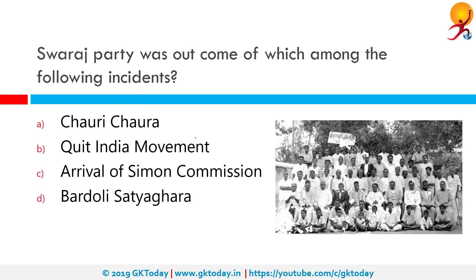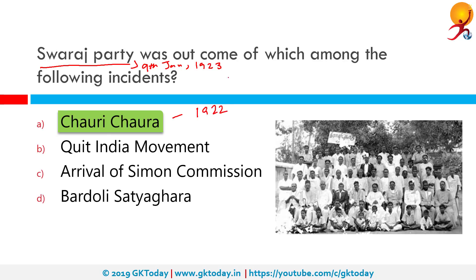The Swaraj Party was the outcome of which incident? The correct answer is the Chauri Chaura incident. The Swaraj Party was formed on 9th January 1923 as a result of the Chauri Chaura incident, which occurred on 5th February 1922, when a group of police officers were attacked and killed by a mob.